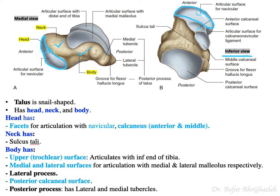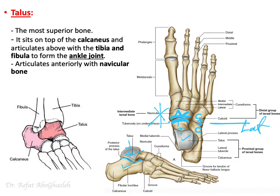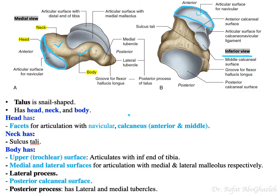In addition to the navicular articular surface, the head also has articular surfaces for the calcaneus inferiorly — specifically anterior and middle calcaneal articular surfaces. So to summarize the head: it has the navicular facet plus anterior and middle calcaneal facets.